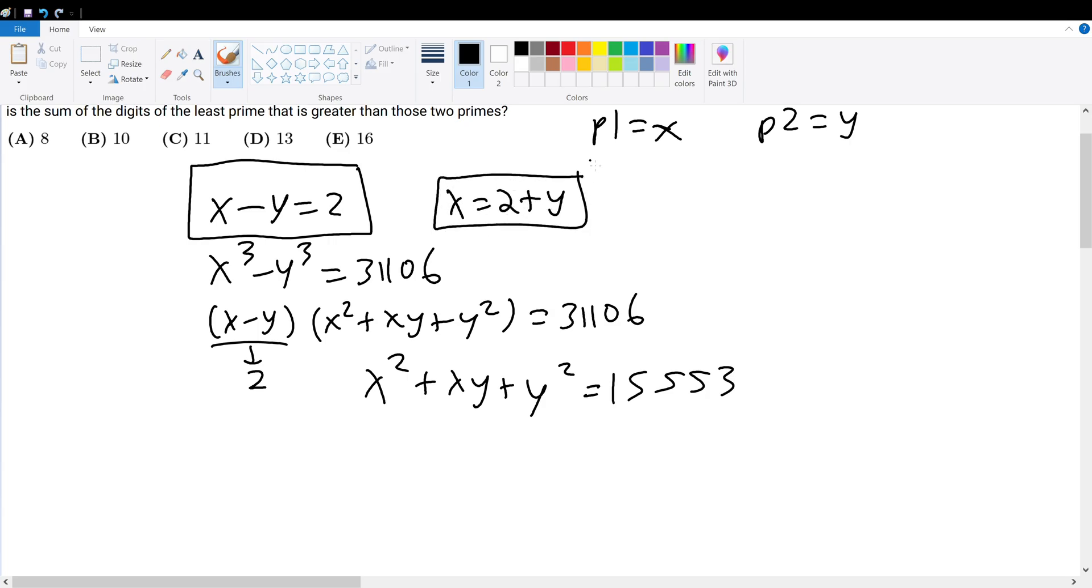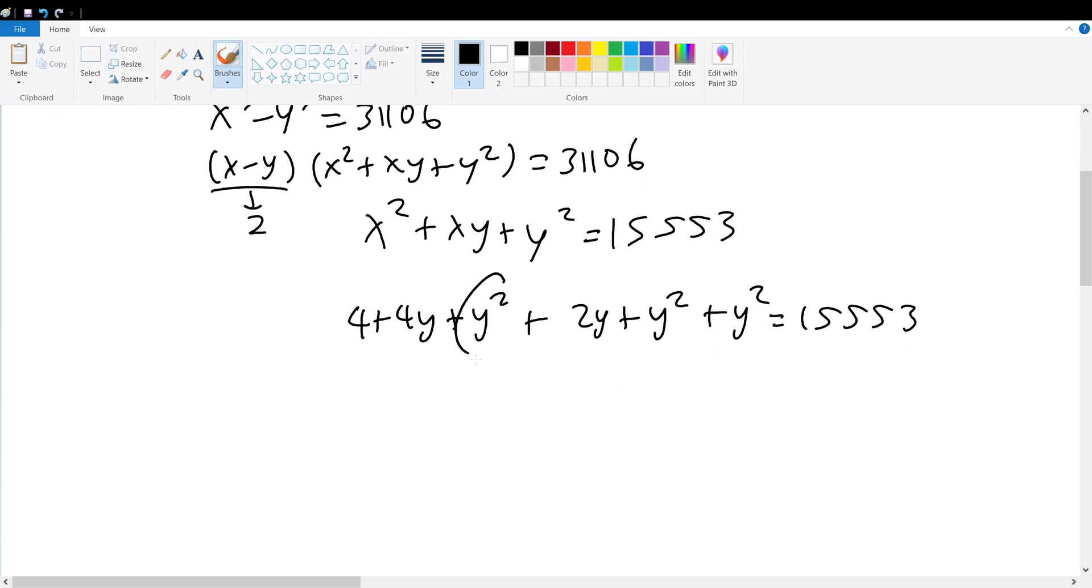That gives 4 plus 4y plus y squared plus 2y plus y squared plus y squared equals 15553. I can simplify: I have three y squareds, 4y and 2y, so adding 6y.